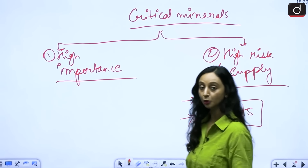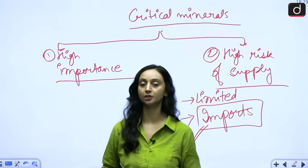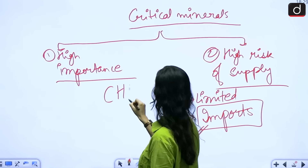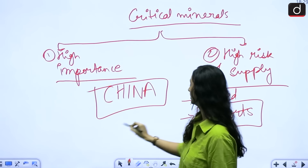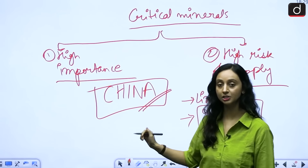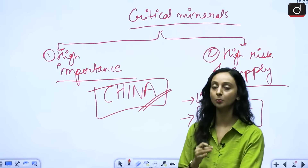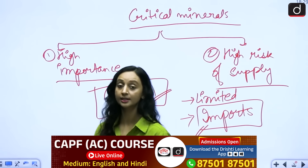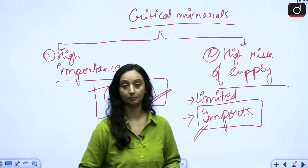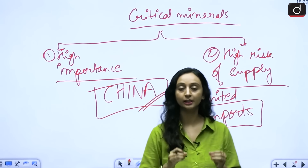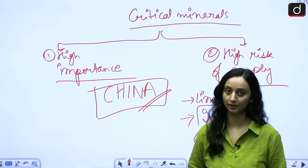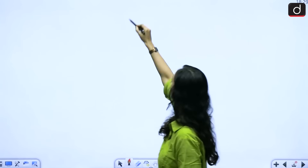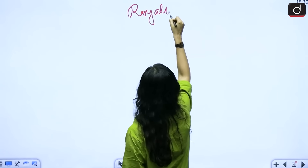In today's world, the monopoly over the availability and extraction of critical minerals and rare earth minerals belongs to China. Any disruption in China automatically causes a global supply chain disruption. That is why it is very important for countries like India to diversify their markets and increase their own domestic supply, to reduce import dependence — and in this direction, the government has rationalized the royalty rates.